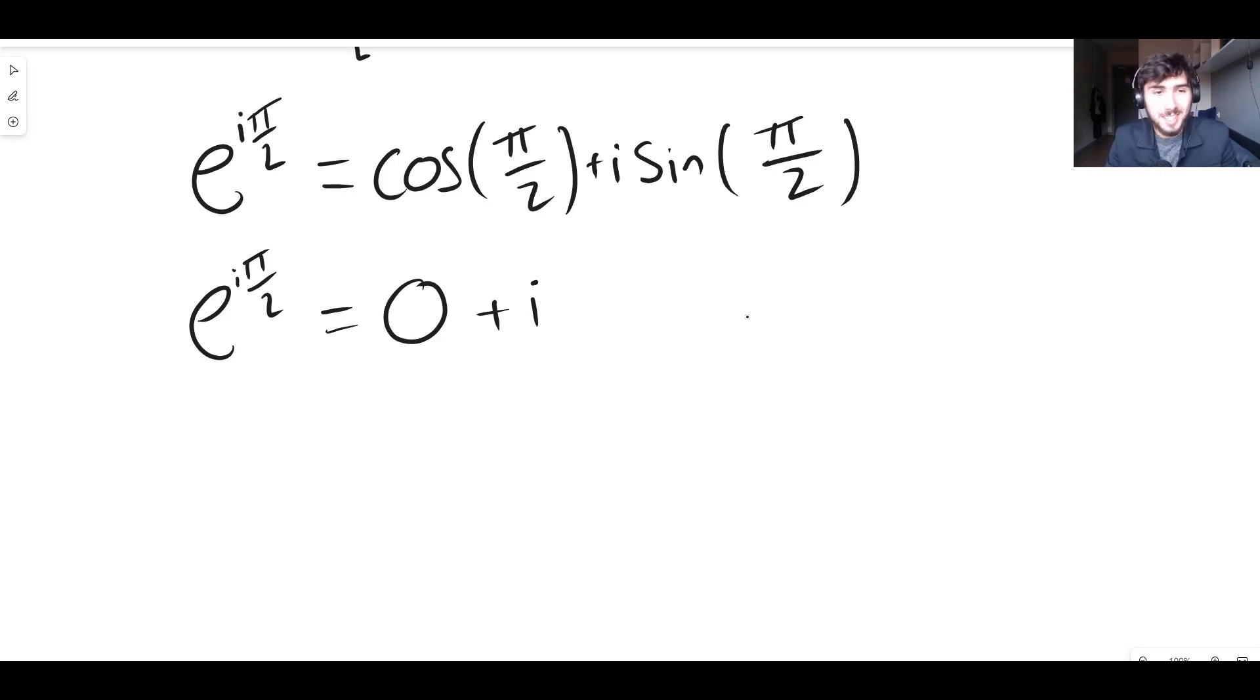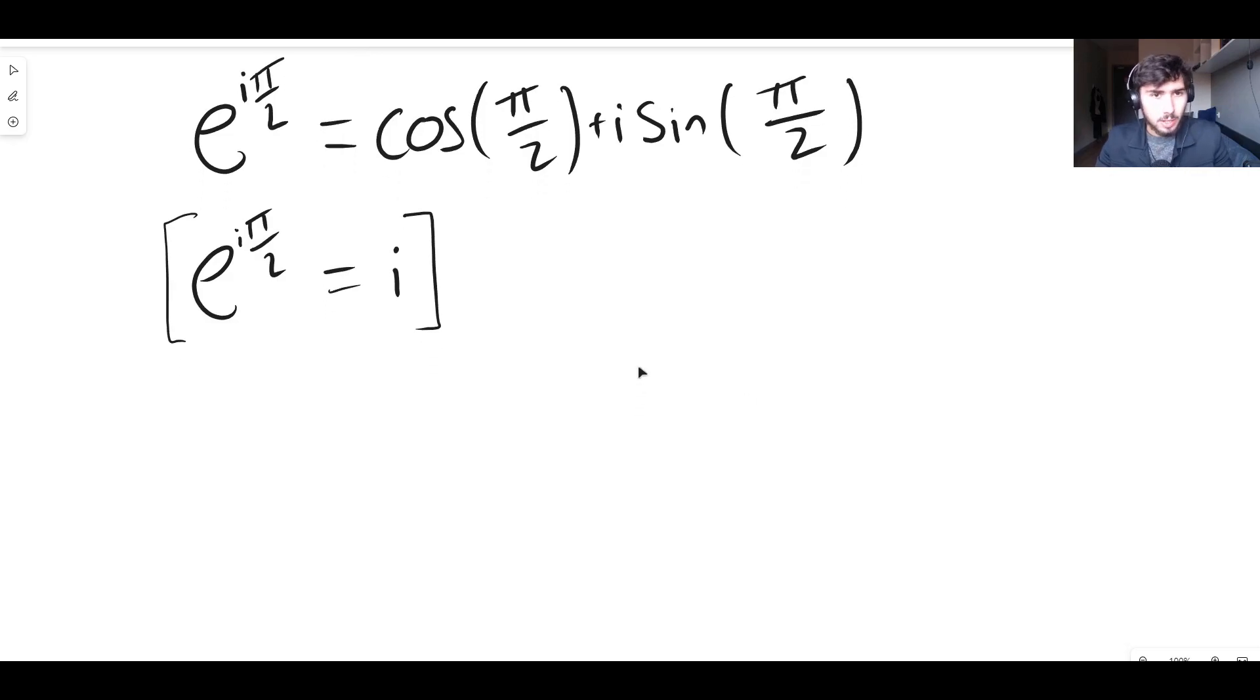So that means that we can say that e to the i pi on two is just i. And this is a strange relationship in and of itself, right? Like e to the power of i times pi over two is i, which is very strange, but it's true.